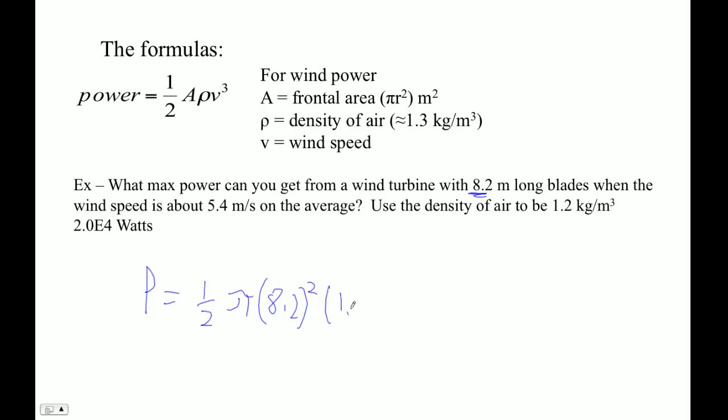And the density is 1.2. And then the velocity is 5.4. Squared like that. Oops, that's to the third. Can't forget that. This is really pretty amazing. If you double your wind speed, you actually multiply the available power by a factor of 8.